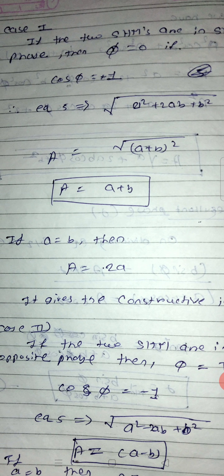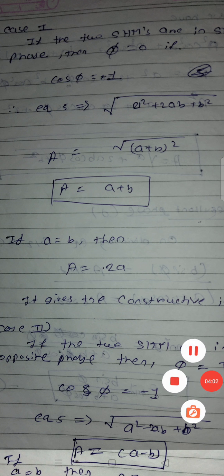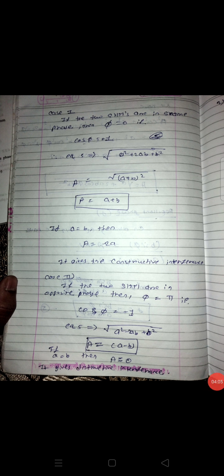So A = a + b. The square and square root cancel each other, giving A = a + b. If a = b, then capital A = 2a, twice the small a. This gives constructive interference in this case — when the resultant is maximum, there will be constructive interference.